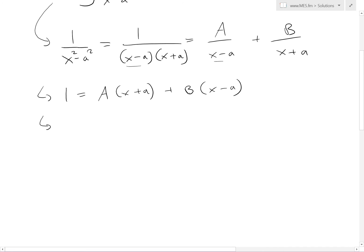Now, as I showed in my earlier video, one method is just to assign values for x. In this case, let's let x equals a, so that this cancels. We're left with 1 equals A times 2a. So we just solve this: A equals 1 over 2a.